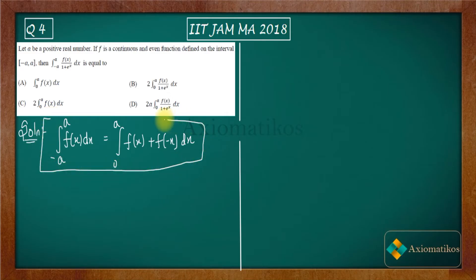Now if you remember this property then it will be very easy. You have minus a to a f(x) over 1 plus e to the power x. I will use this property and according to this property I can do this. Why am I using this property? Because in your options you have zero to a limits, only from zero to a. It is not from minus a to a.